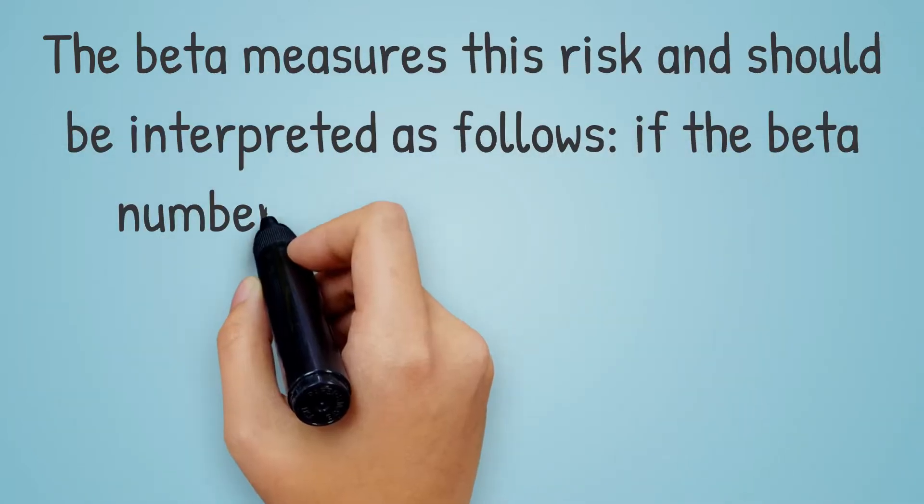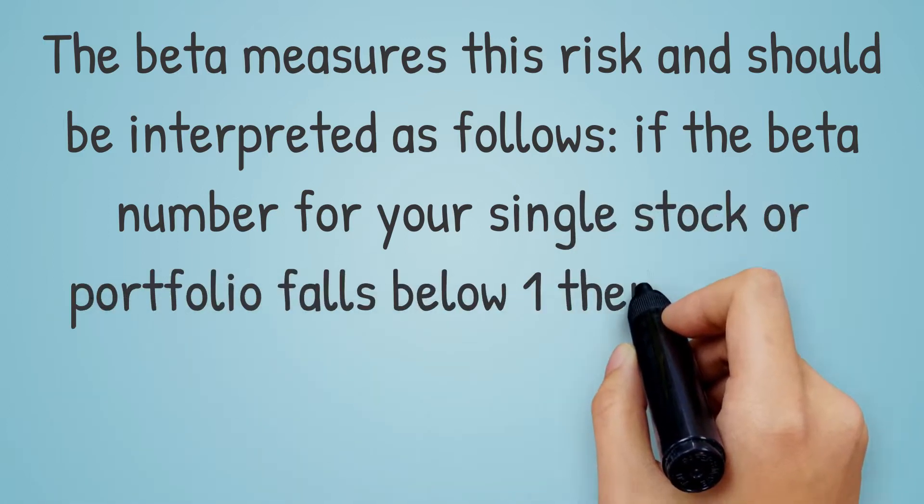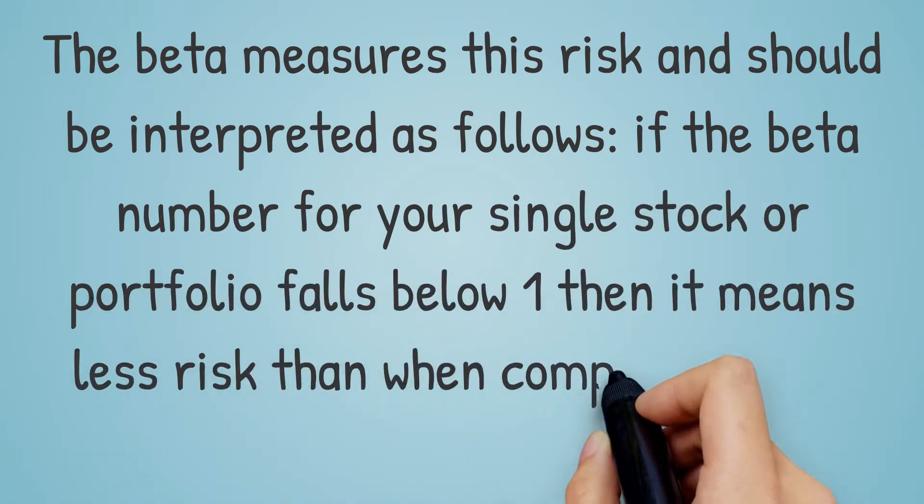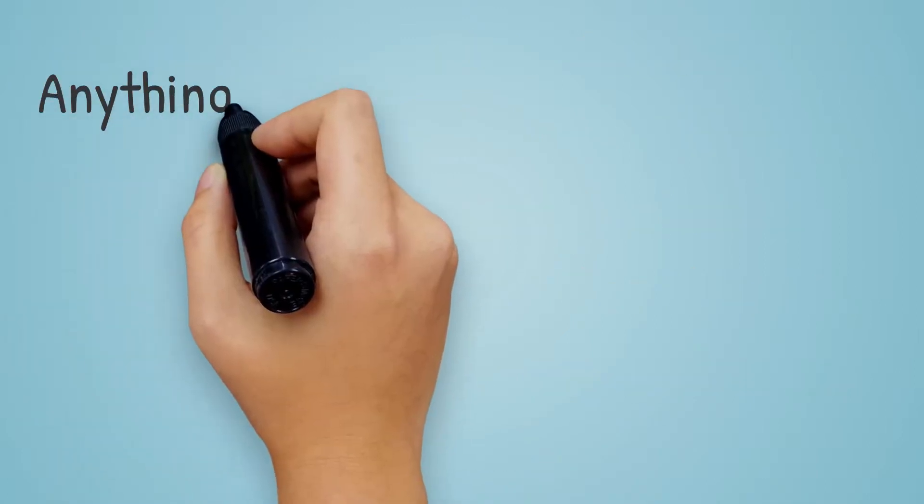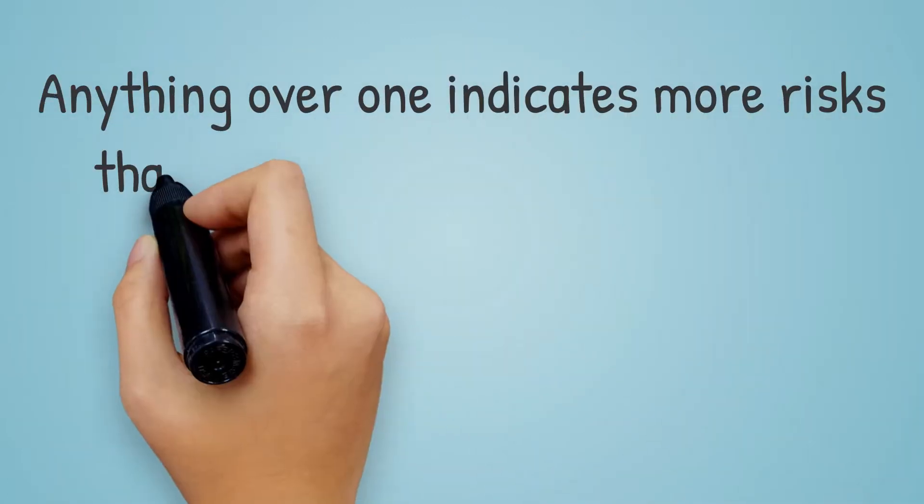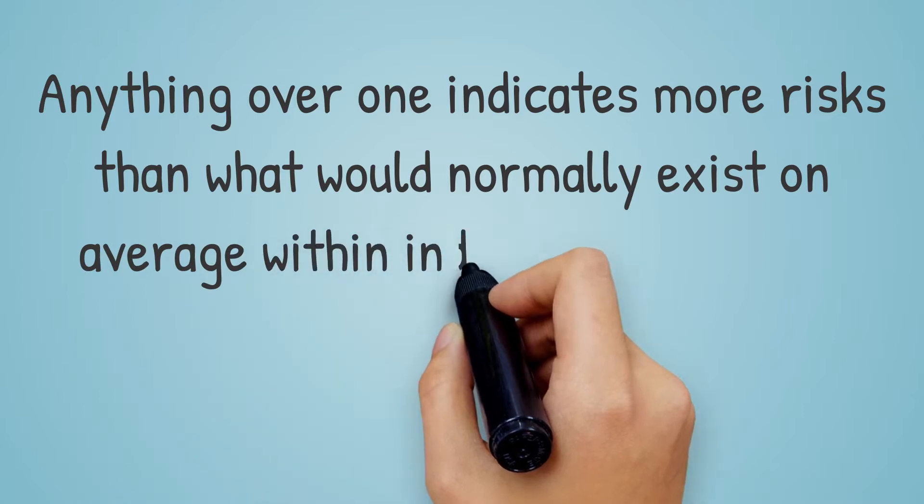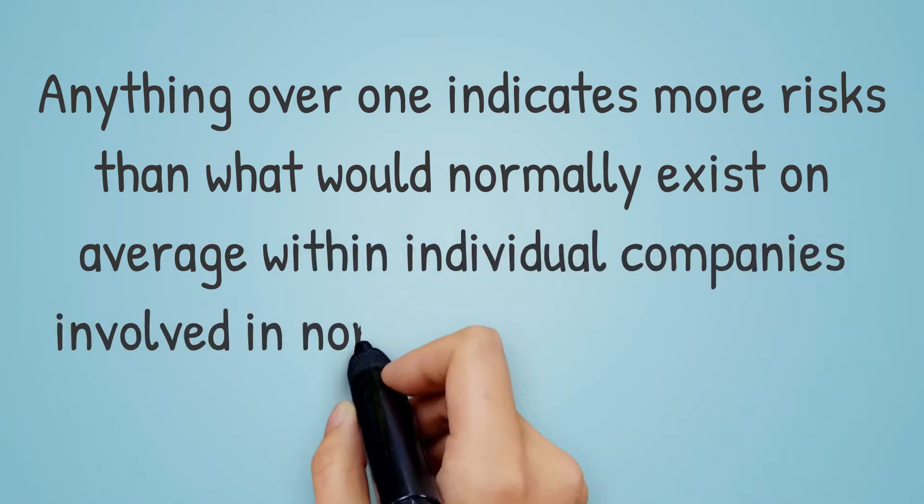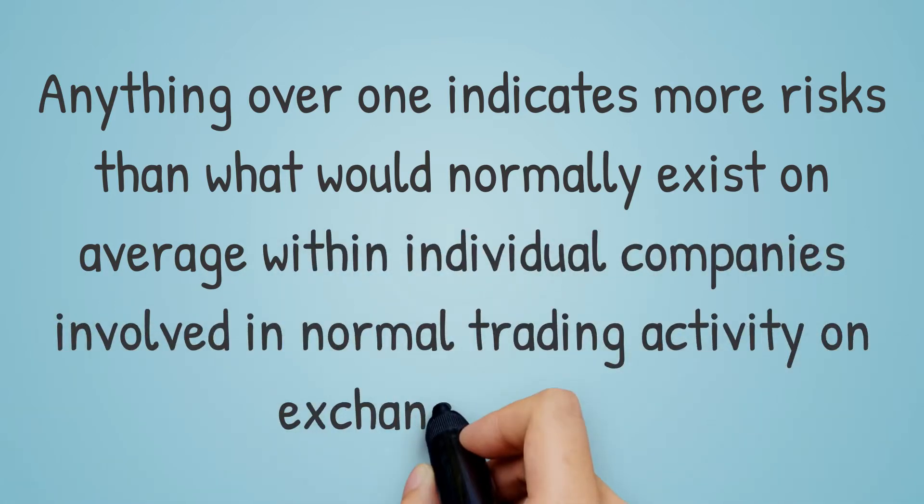If the beta number for your single stock or portfolio falls below 1, then it means less risk than when compared to the market. Anything over 1 indicates more risks than what would normally exist on average within individual companies involved in normal trading activity on exchanges today.